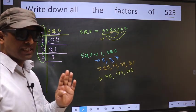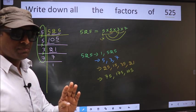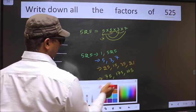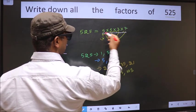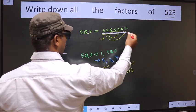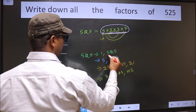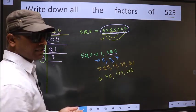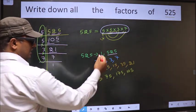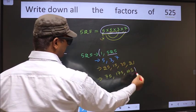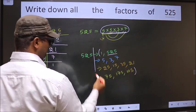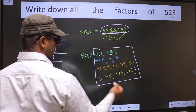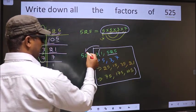Now you take the combination of all 4 numbers. Here we have only 4 numbers, so if we take all 4 numbers, we get 525 itself. Therefore, these are all the factors of 525.